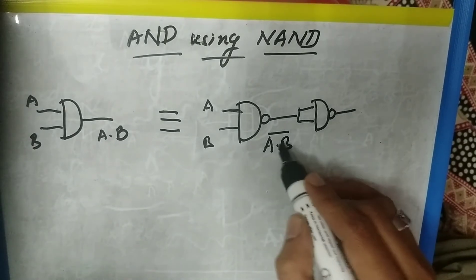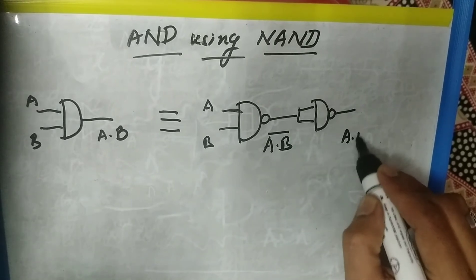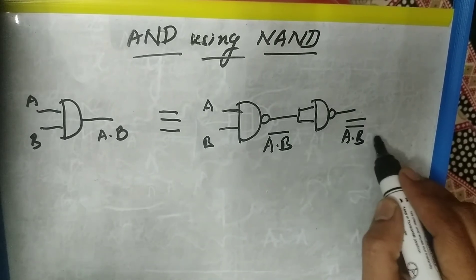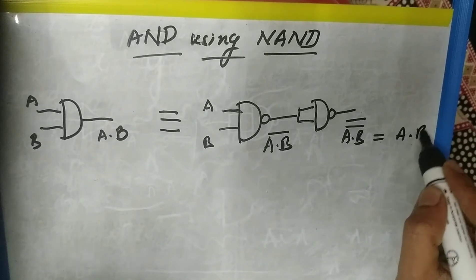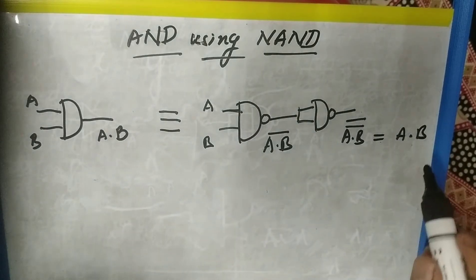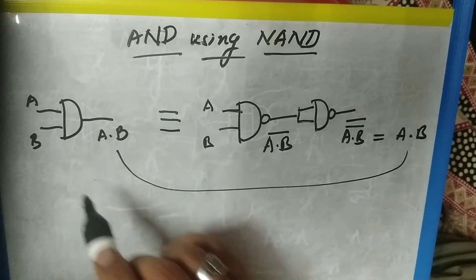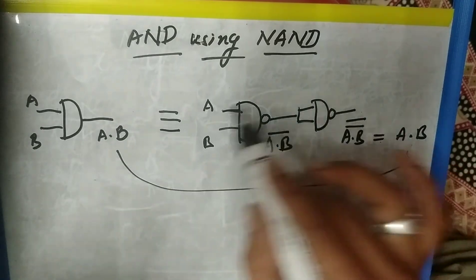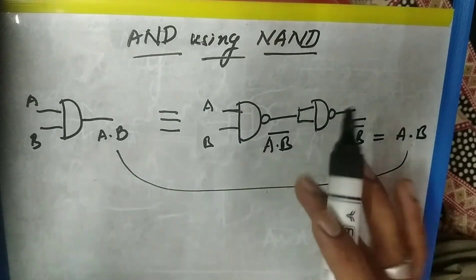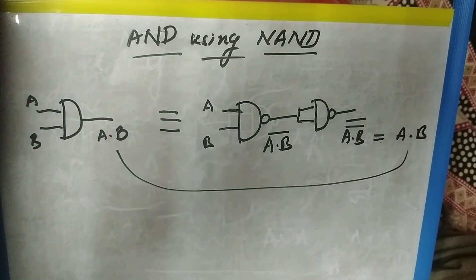That will be nothing but AB whole bar. So it gives you AB whole bar double bar, which is nothing but A dot B — the AND gate output, same as the AND gate output. This is how we construct the AND gate using NAND gate. Thank you for watching and please subscribe to our channel.